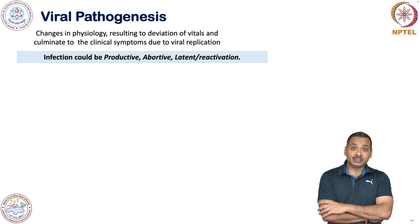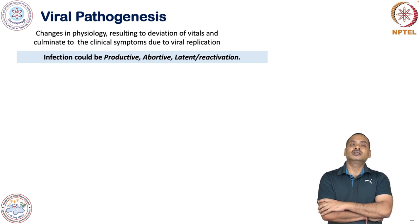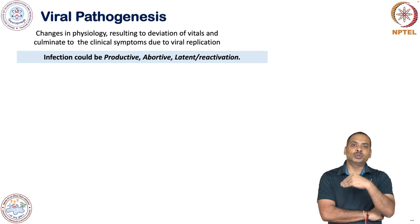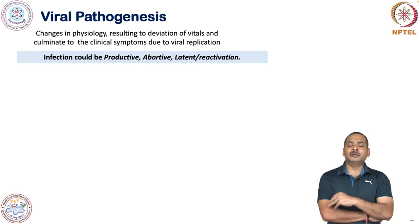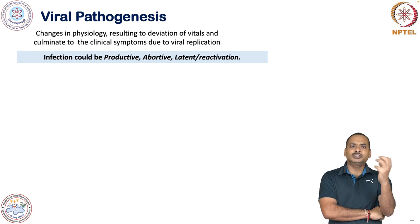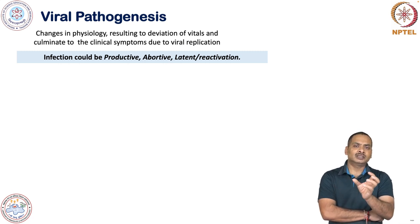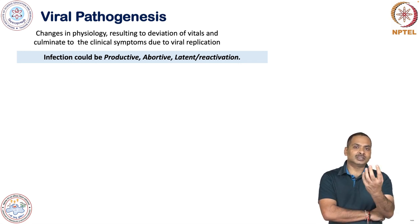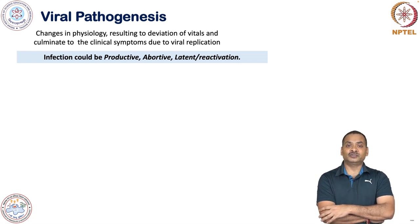One is productive infection: when the genome is transferred into the host cell, they start replicating and making more copies. Another is abortive infection: the genome is there but the host response is such that the genome is degraded, removed, or the genome-containing cells are eliminated.